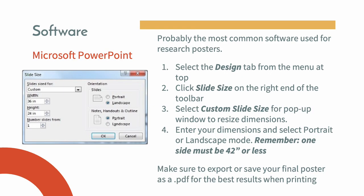You can create posters in a plethora of software programs. Starting with Microsoft PowerPoint: by clicking the design tab at the top menu, you can access the slide size button. From there you can set the size of your slide. Once that is done, you can begin designing your poster. Make sure you export or save your final poster as a PDF for best printing results.